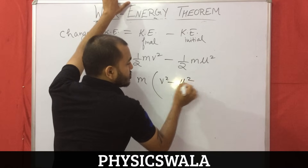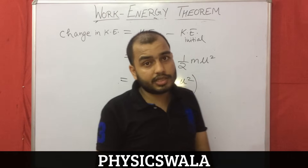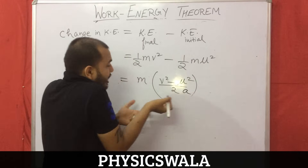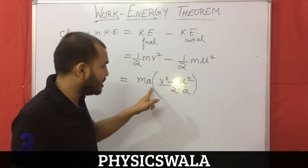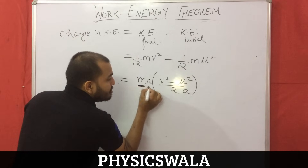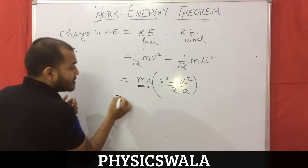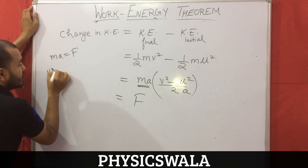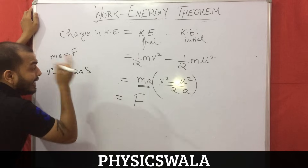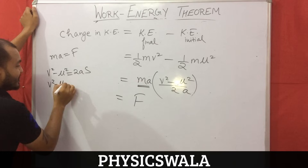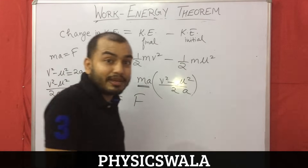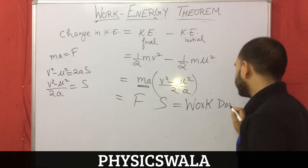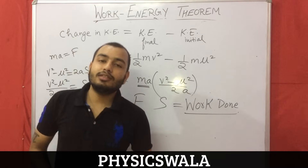Can I multiply the numerator and denominator by a common term? Yes. I divide and also multiply by a (acceleration), so a cancels. Now notice: m into a is force (F = ma). And (v squared minus u squared) divided by 2a — remember the equations of motion? v squared minus u squared equals 2as. So (v squared minus u squared) divided by 2a is nothing but displacement s. Therefore force into displacement is work done. Proved. So this is the work-energy theorem, and this is a very important and very basic concept of physics. You should always know this. Thank you.